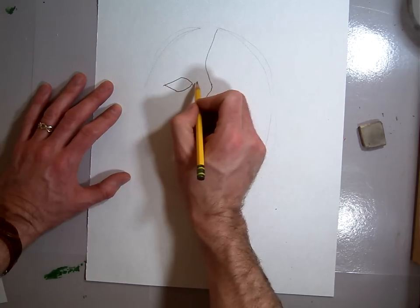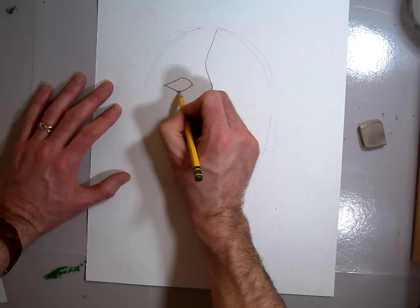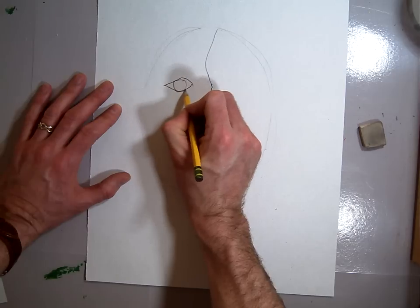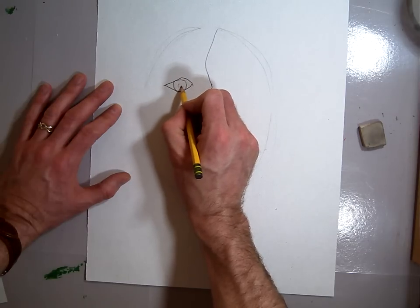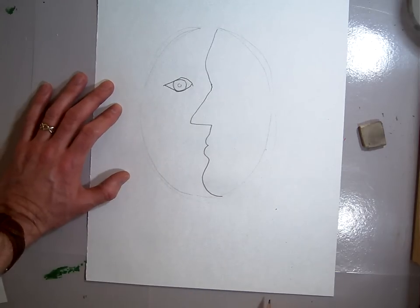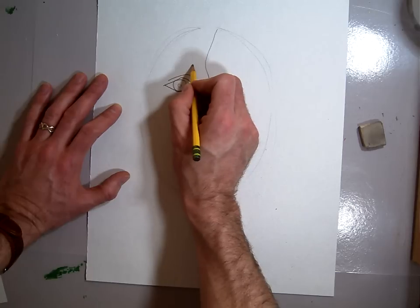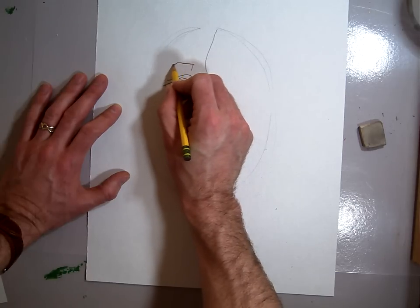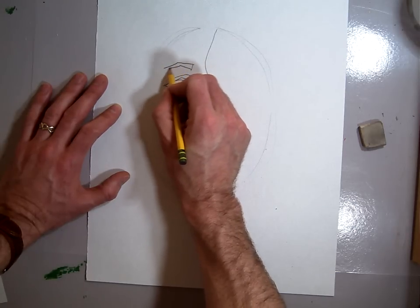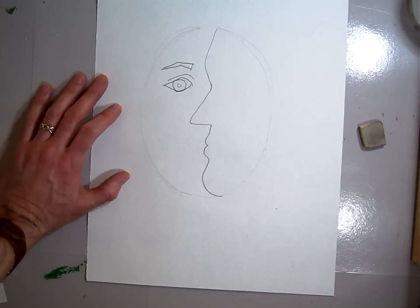Like this. I'm going to put the eyeball in, which is a nice circle, and indicate where the pupil is going to be. I'm going to take the eyelid here and draw a kind of crazy shape for the eyebrow.